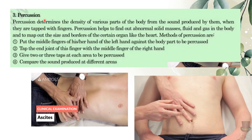Percussion involves tapping your body parts — not only the abdomen. You can tap the chest in the intercostal spaces, the back along the ribs, and the abdomen. You can detect abnormal findings such as abnormal solid masses, fluids, and gas.